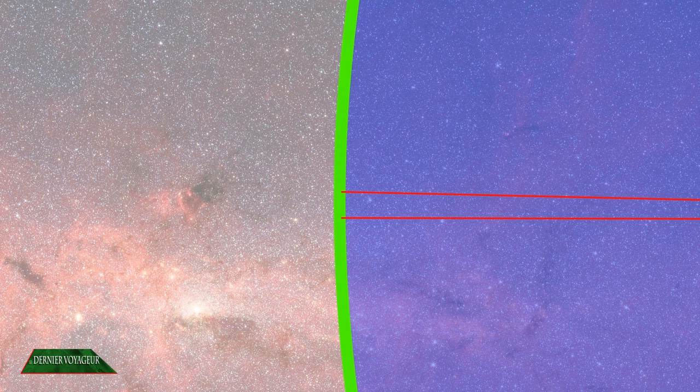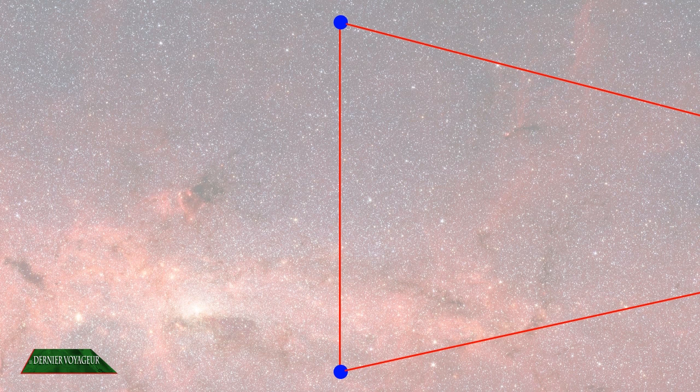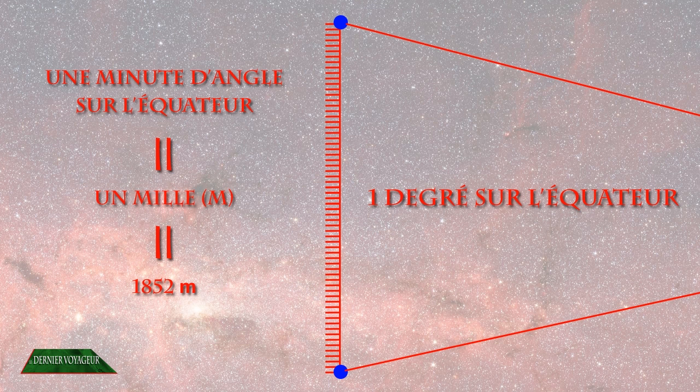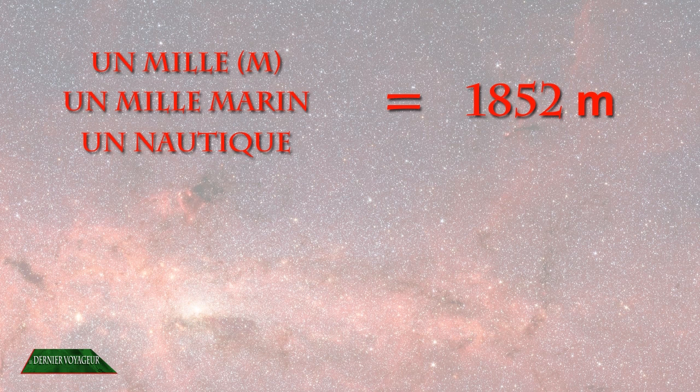Nous savons que nous pouvons diviser un angle en degrés, puis diviser à leur tour chaque degré en 60 minutes. Le mille marin, qui peut également être appelé simplement nautique, est la longueur de l'arc d'une minute d'angle sur l'équateur. Une autre solution consiste à mesurer cette minute d'angle à une latitude précise sur un méridien, mais l'essentiel est de retenir qu'un mille vaut 1852 mètres.